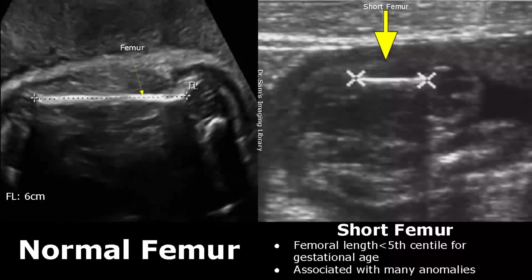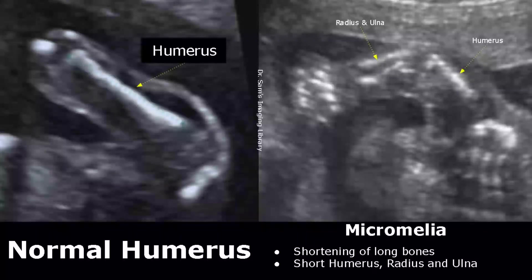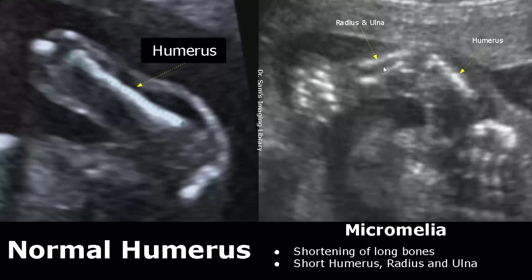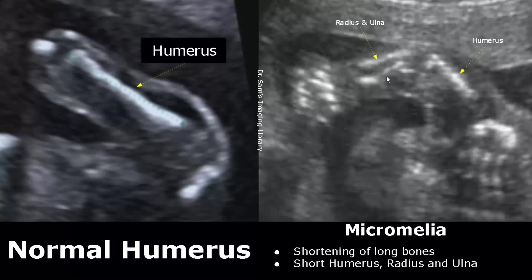A short femoral length is associated with many types of anomalies, such as growth restriction and skeletal dysplasias. The femoral length will be shorter than expected for gestational age. Micromelia is a term that refers to shortening of long bones present in the limbs. In the normal image we can see a well-developed humerus, whereas in the abnormal image we see a small humerus as well as small radius and ulna.